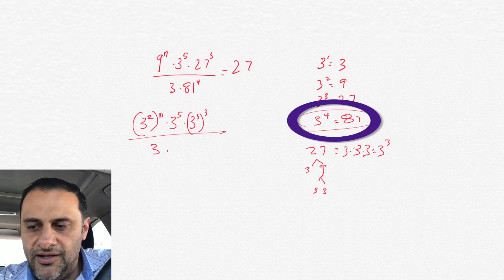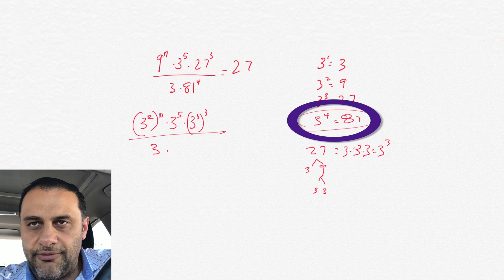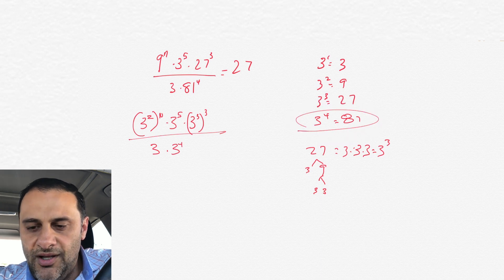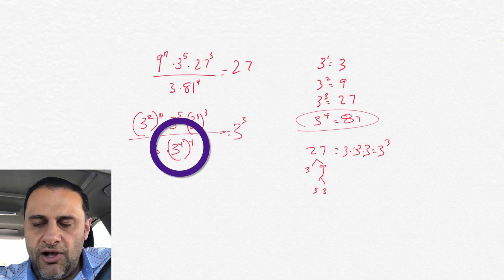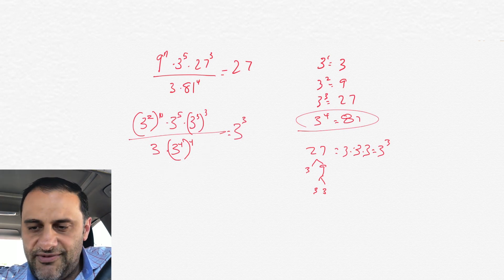81, as you can see here to the right, 81 is like 3 to the 4th power, so we have 3 to the 4th power and all of that to the 4th power, and that all equaled 27, and 27 is like 3 to the 3rd power.